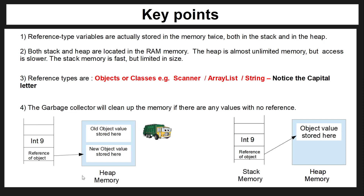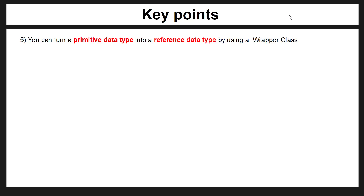What the heap memory allows you to do is store values that are much bigger. For example, a string can contain a lot of methods because we have more memory available. The behavior of a reference type will be very different to the behavior of a primitive type, and in the next couple of videos we're going to look at what kind of behavior we can do with the string object.